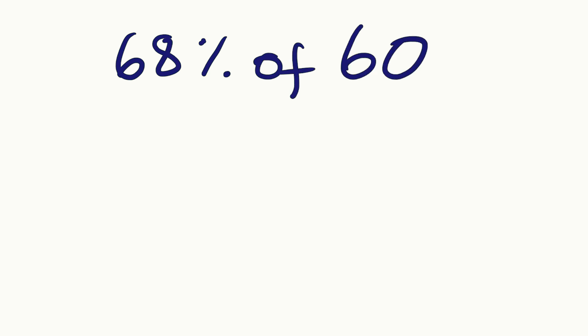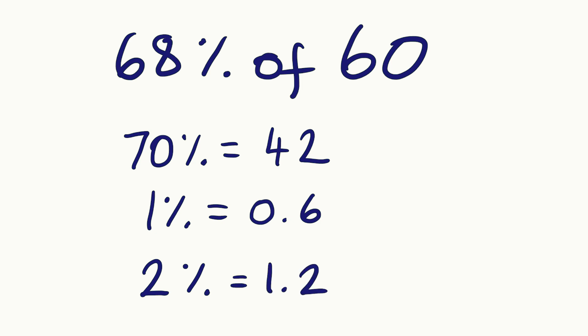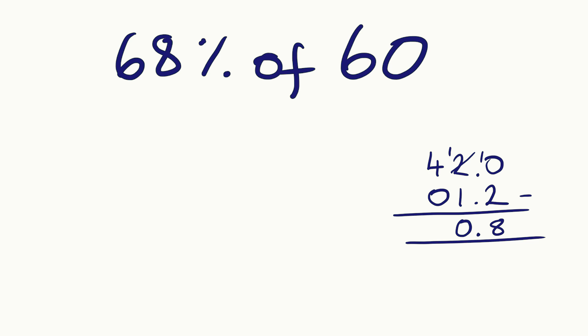I think much easier would be to just find 10%, which is 6, and multiply that by 7 to find 70%. So 70% would be 42. Then I need to take away 2%. Well, 1% I divide by 100, so that would be 0.6. 2% will be twice as much, so that will be 1.2. So I've got to do 42 take away 1.2, which gives me 40.8.